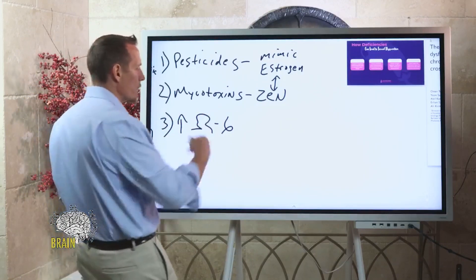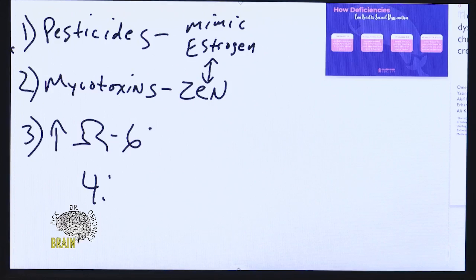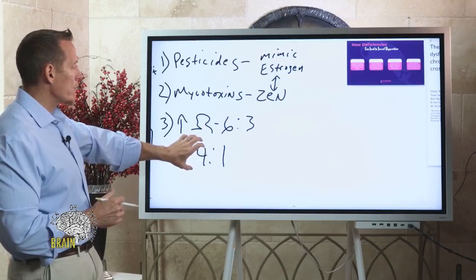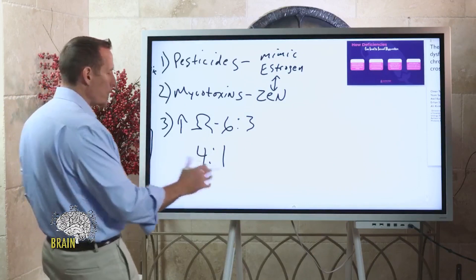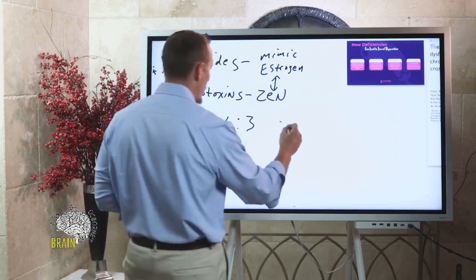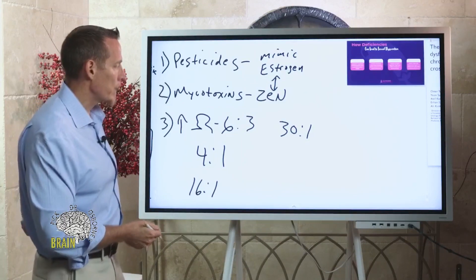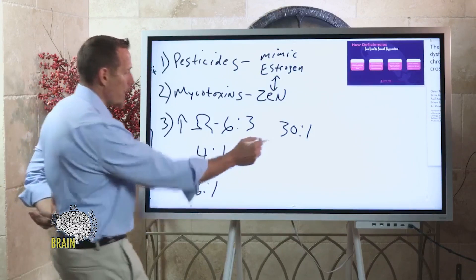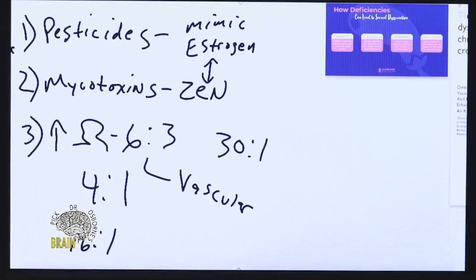Regarding omega-6 to omega-3 ratio, it should be somewhere around 4 to 1 — meaning for every four omega-6 fatty acids you eat, you should eat at least one omega-3. Most Americans are at 16 to 1 or higher. In my practice when I test people, I often see 30 to 1 ratios, and a lot of those individuals really don't want to have sex — their libido is on the floor. This has to do with vascular flow, because high levels of omega-6 can drive up the inflammatory process.